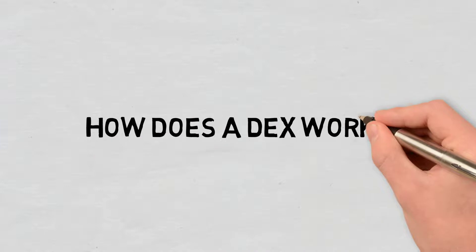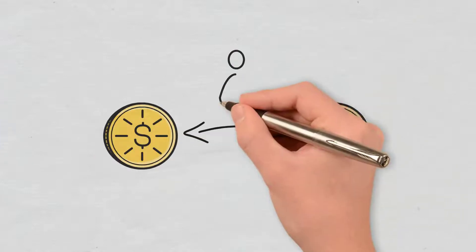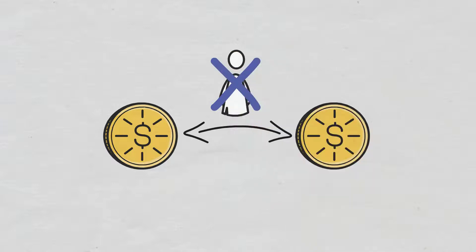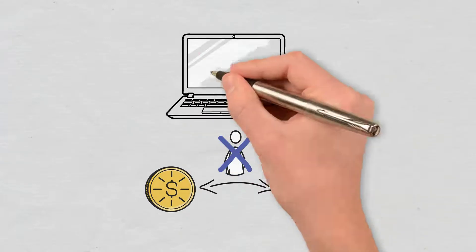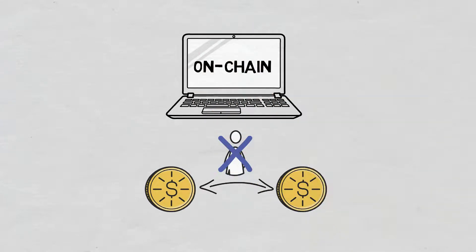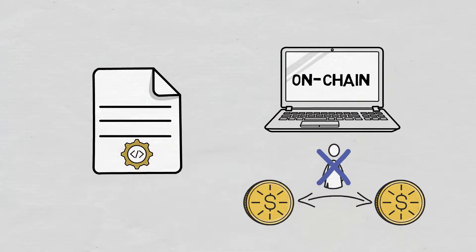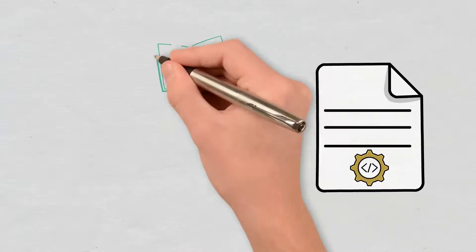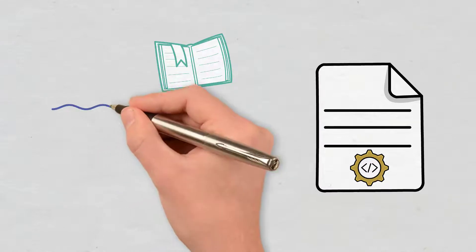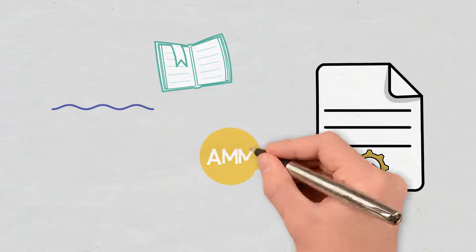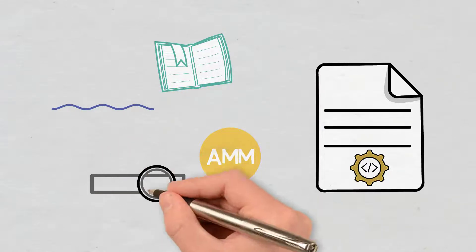How does a DEX work? A DEX operates without an intermediary for clearing transactions, and orders are executed on-chain. To facilitate trading, it relies on self-executing smart contracts. It uses different DeFi protocols and mechanisms, such as order books, liquidity pools, AMMs, and aggregation tools.